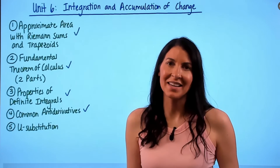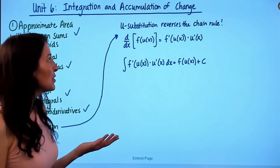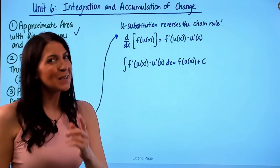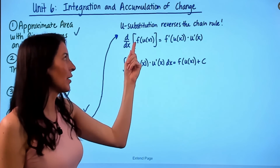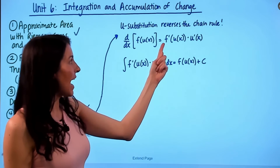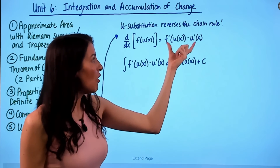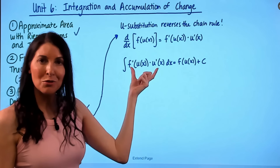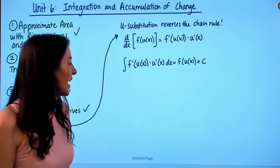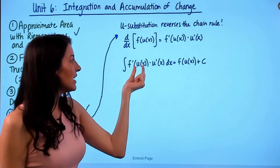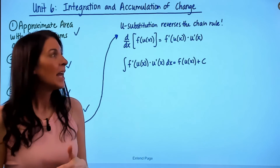Lastly, let's go through u-substitution, a very helpful technique for finding antiderivatives. U-substitution reverses the chain rule. Recall that the chain rule applies when taking the derivative of a composite function — you take the derivative of the outside function and multiply by the derivative of the inside function. In u-substitution, you identify the inner function as u, take its derivative, and look for that derivative to appear elsewhere in the integrand.